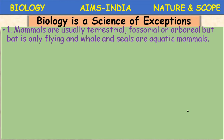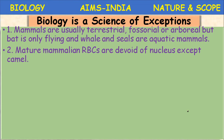Another exception: mature mammalian red blood cells are devoid of a nucleus, except in camels. Generally, an early (immature) RBC contains a nucleus, but as it matures, the nucleus and other organelles disappear — making it prokaryotic-like. However, in camels and llamas, the RBCs are nucleated, which is an exception.